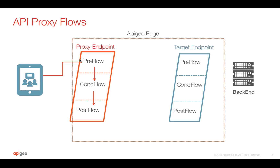Once the proxy endpoint finishes, the request goes to the target endpoint. Target endpoint pre-flow executes no matter what, and then the conditional flow of the target endpoint executes based on the conditional statements we define. Then the request goes to the target endpoint post-flow, and finally the request goes to the backend.